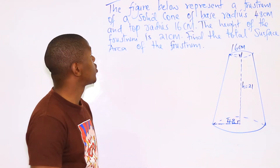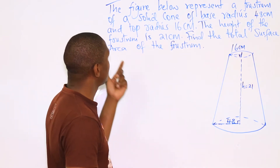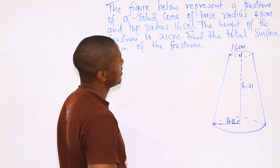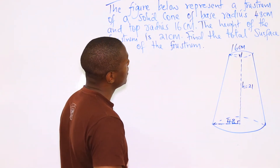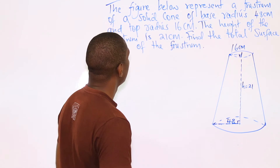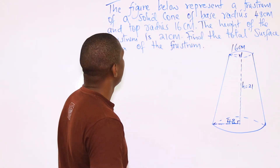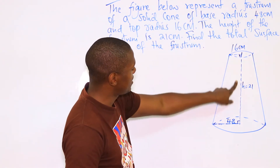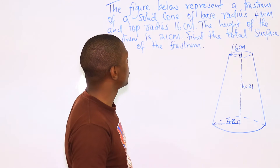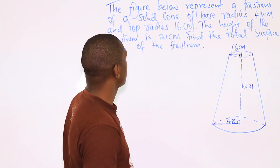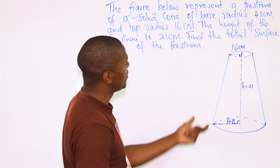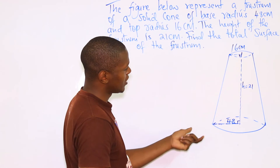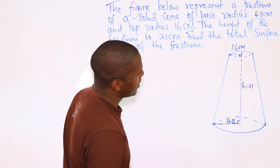On to question 2: the figure below represents a frustum of a solid cone. The base radius is 48 centimeters, the top radius is 16, and the height of the frustum is 21. You are asked to find the total surface area of this frustum. It is good to note that it is a solid frustum.